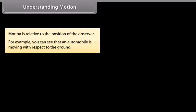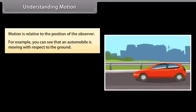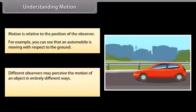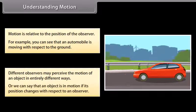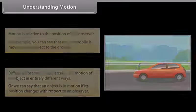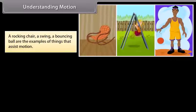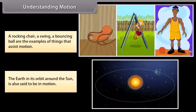Understand motion. Motion is relative to the position of the observer. For example, you can see that an automobile is moving with respect to the ground. Different observers may perceive the motion of an object in entirely different ways. An object is in motion if its position changes with respect to an observer. A rocking chair, a swing, a bouncing ball are examples of things that exhibit motion. The earth in its orbit around the sun is also said to be in motion.